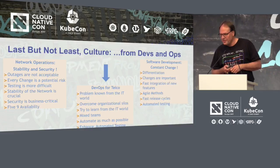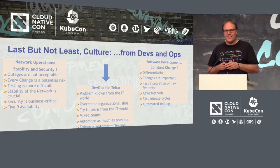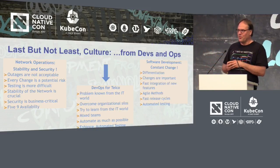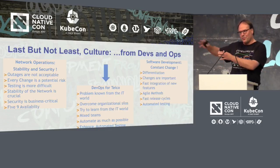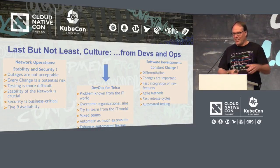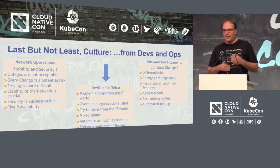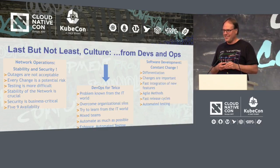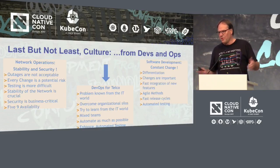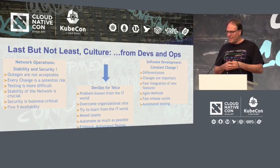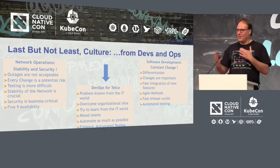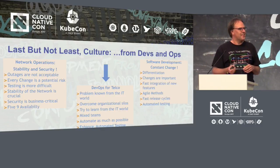Last but not least, culture. The right side is really the IT thing, and I think that's what you know. We want to have more agile, more of everything as well. On the other hand, we have sort of the traditional way of operating our networks, with very high reliability requirements, averse to risk-taking, and averse to changing things in the infrastructure. We would love to stay somewhere in between those, to have DevOps in a telco environment. We see that it's very appealing, but we also see the difficulties doing that.